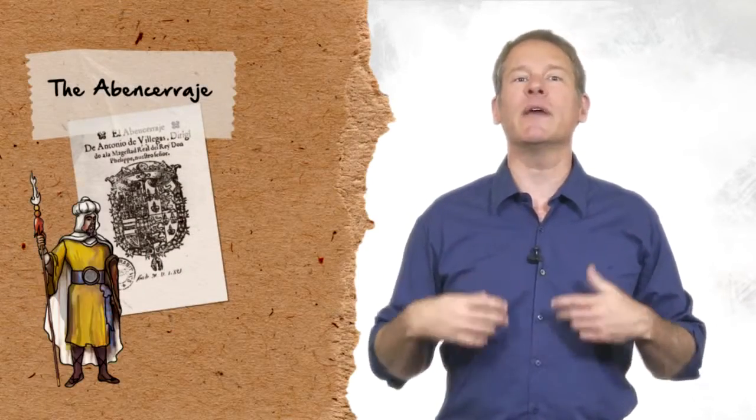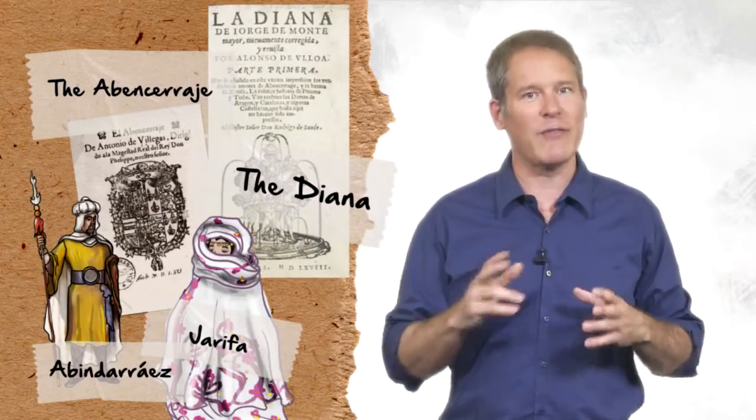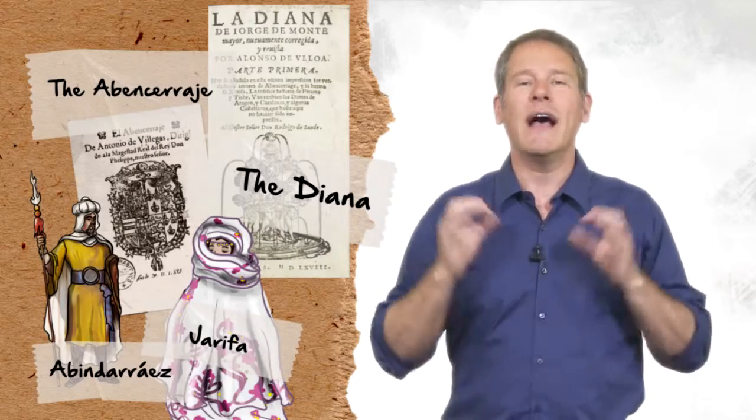Clearly, Cervantes envisioned the Moorish novel, a genre exemplified by the Abindarraje, a tale about the love between Abindarraeth and Harifa, which was added at the end of the Diana, a pastoral novel by Jorge de Montemayor, as integral to his own text. Just in case we have not been paying attention, Don Quixote himself explains the nature of his madness to his neighbor in clear terms.